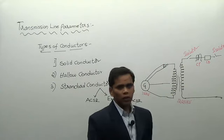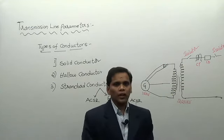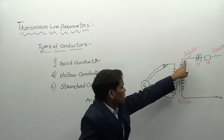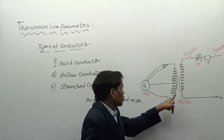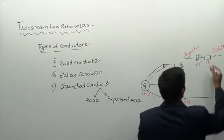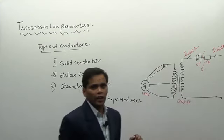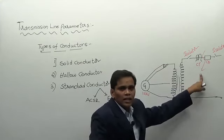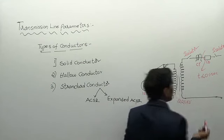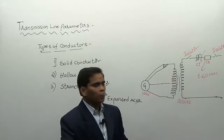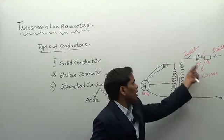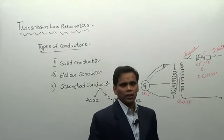These protective equipments are arranged on the transmission line to protect the equipment connected near it, including the transformer and generator. Whenever any fault occurs on the line, this fault can be cleared within less than 0.1 seconds. By clearing the fault within 0.1 seconds, we can directly protect the equipment connected at the transmission line. That is why we use circuit breakers, isolators, and similar protective equipment.